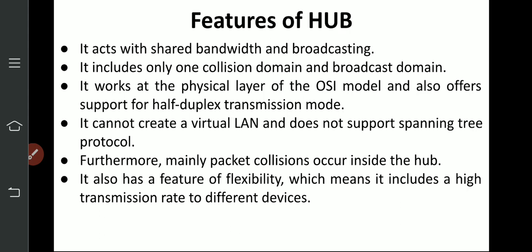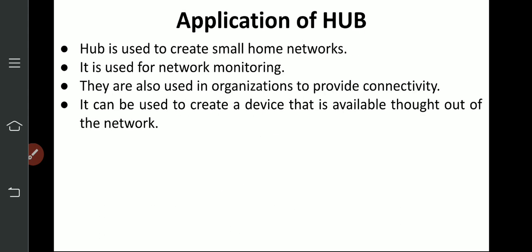Furthermore, packet collision mainly occurs inside the hub. It has a feature of flexibility, which means it includes a high transmission rate to different devices — supporting different transmission rates for different devices. Hub is used to create small home networks.